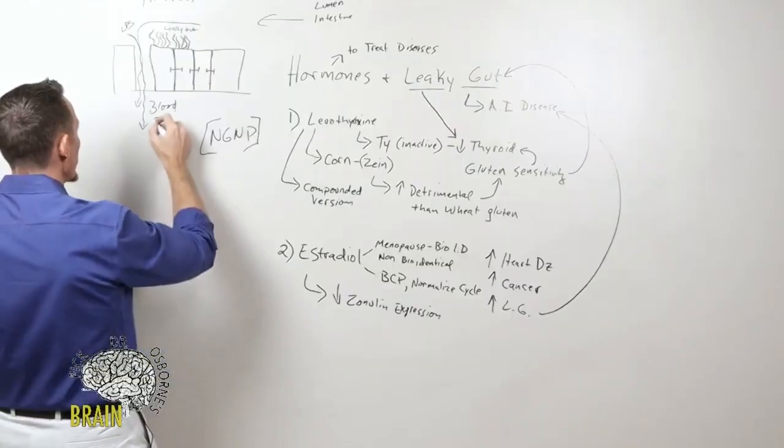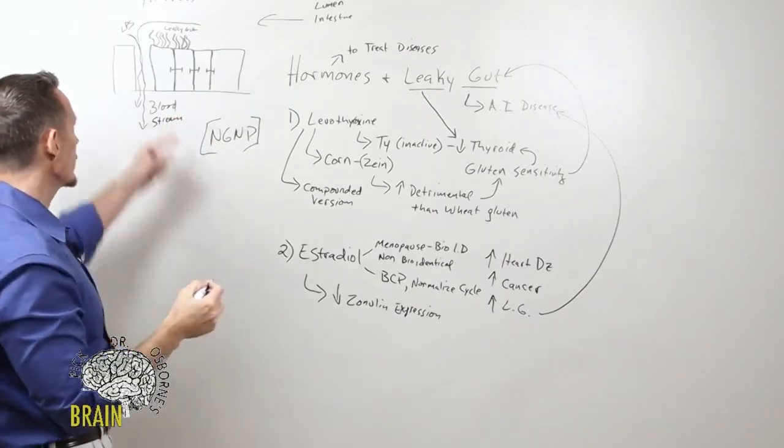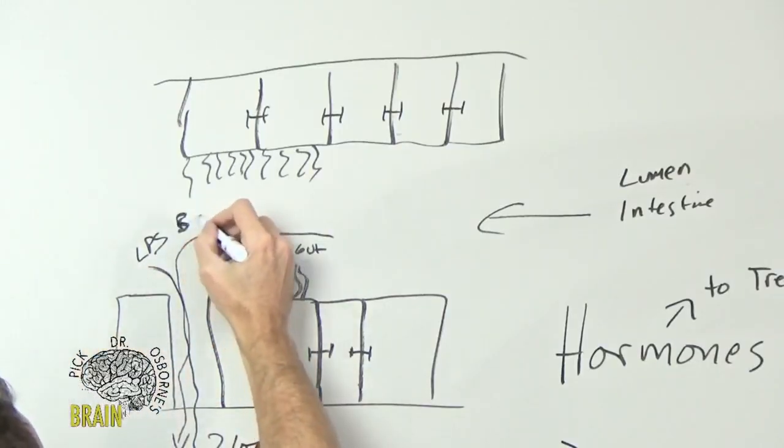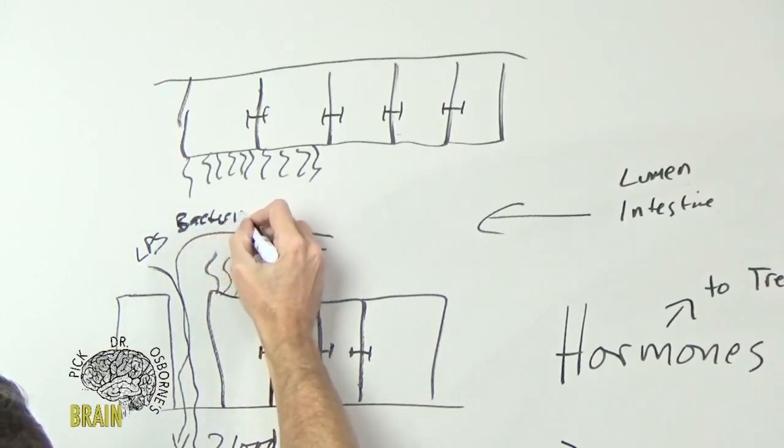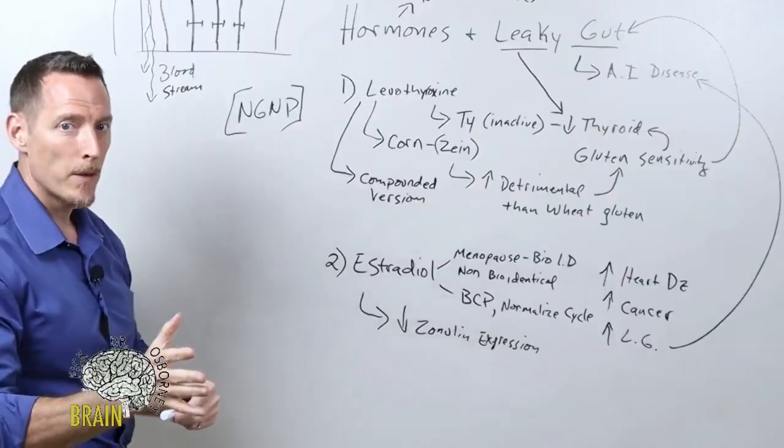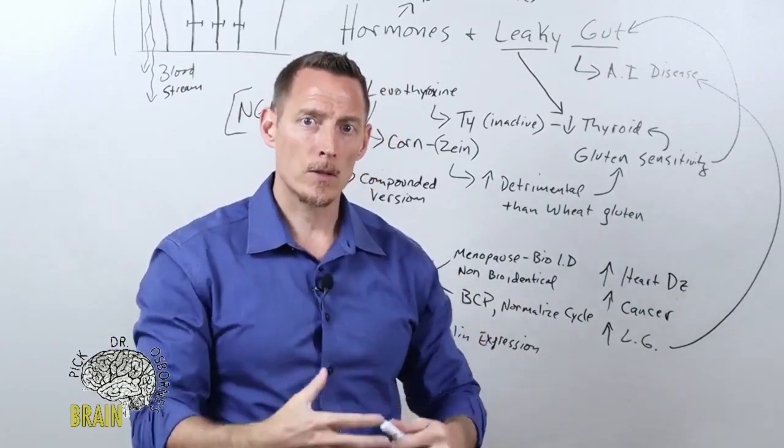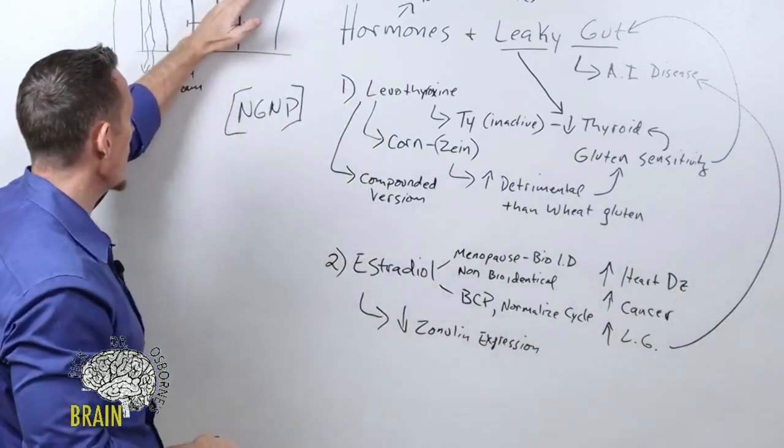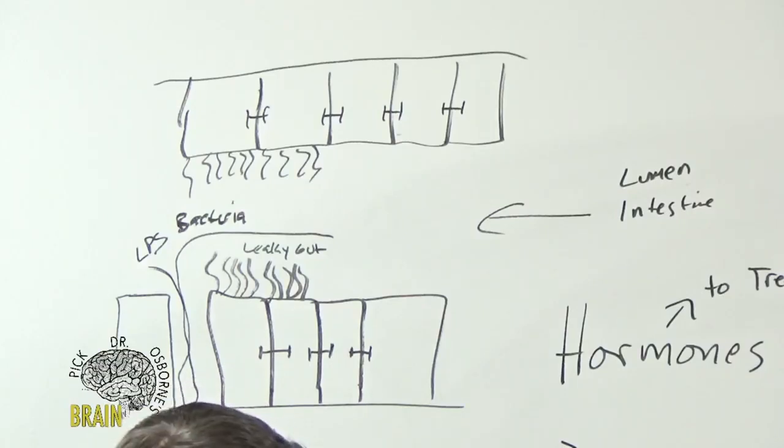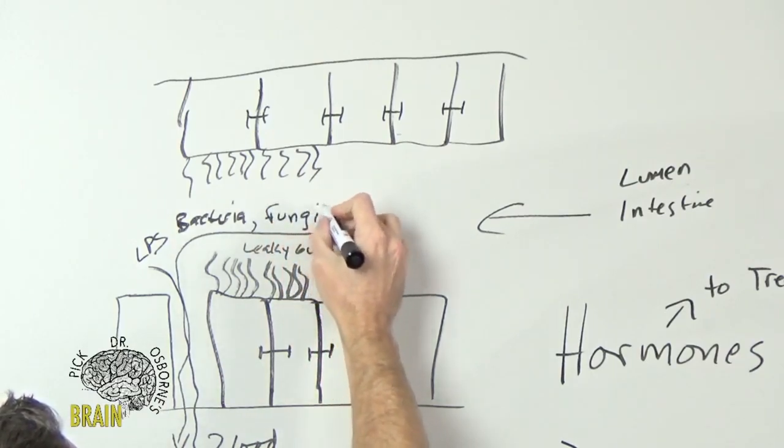They get into your bloodstream and activate your immune system to create an inflammatory response to attack it. Your gut's not supposed to leak these chemical toxins, bacteria, and fungus—all that's supposed to stay in your gut. I did an interview with Dr. Fasano a couple years ago. He's one of the doctors that discovered leaky gut through his research, and he said what happens in the gut doesn't stay in the gut—it's not like Vegas.